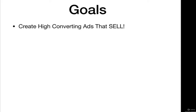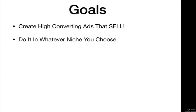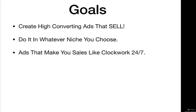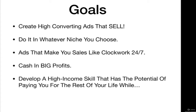The business model is not only about getting some sales one day and then having them plummet the next. The idea is for you to be able to write ads that really sell and make you sales every single day on a consistent basis — in whatever niche you choose. You're going to build ads that make you sales like clockwork, 24/7, 365 days a year.